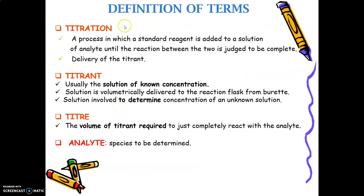Next are the definitions of terms used. First is titration: it is a process in which a standard reagent is added to a solution of analyte until the reaction between the two is judged to be complete. The delivery of titrant is the titration process where the titrant is delivered to the solution in a conical flask. Titrant is a solution of known concentration, usually a standard reagent solution, which is volumetrically delivered from a burette to determine the concentration of an unknown solution.